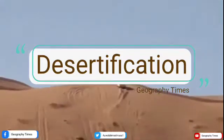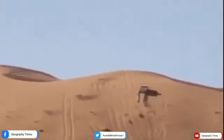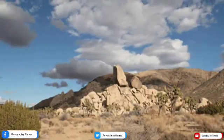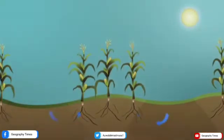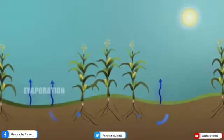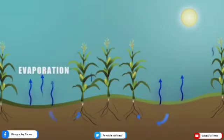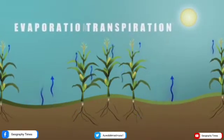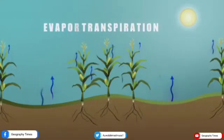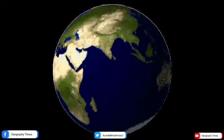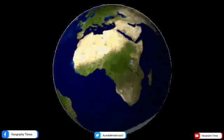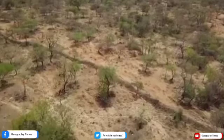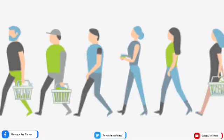A desert is a large, dry, barren region, usually having sandy or rocky soil and little or no vegetation. Water lost to evaporation and transpiration in a desert exceeds the amount of precipitation. Most deserts average less than 25 cm or 9.75 inches of precipitation each year, concentrated in short local bursts. Approximately one third of the earth's land surface is desert — arid land with meager rainfall that supports only sparse vegetation and a limited population of people and animals.